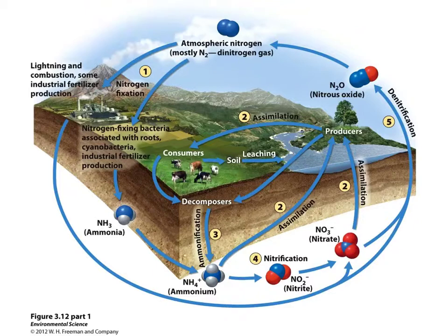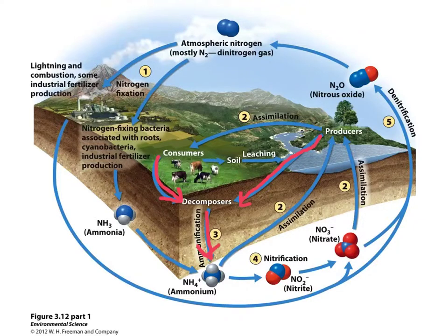Plants and animals also produce waste and die, and all that material contains nitrogen. When plant leaves fall to the ground in the fall, or plants die, that material gets broken down by decomposers in the soil, and likewise animal waste is broken down by decomposers in the soil. Decomposers turn biological nitrogen compounds into ammonium, which can again be taken up by plants. This process is known as ammonification.